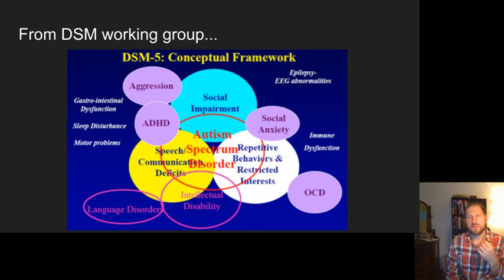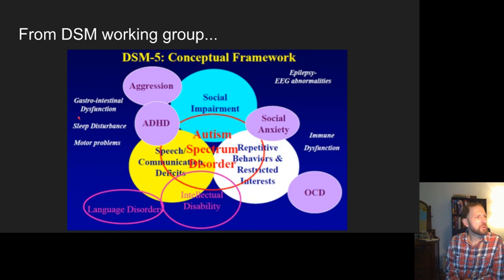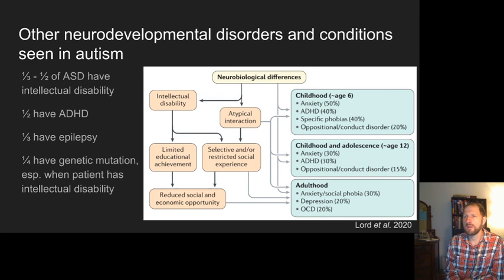We've come a long way. The DSM grappled with the more legitimate aspects of what is associated with autism. The framework uses three main categories: social impairment, deficits in communication, and repetitive behaviors. It's also linked to other diagnoses like ADHD, social anxiety, and OCD, as well as associated symptoms that are quite common, like sleep disturbances, GI dysfunction, and epilepsy. Autism is complex because it presents with other neurodevelopmental disorders, and this slide shows how that can progress through a person's life with a diagnosis of autism.